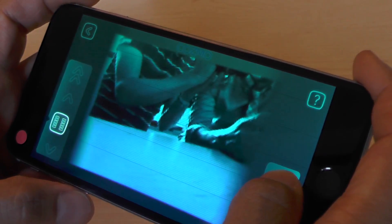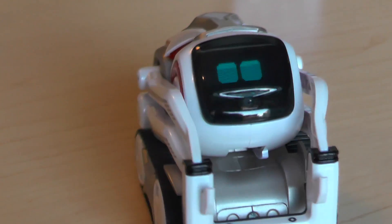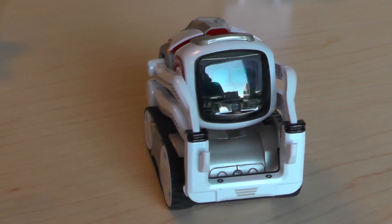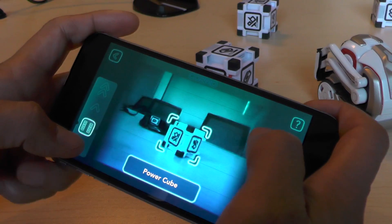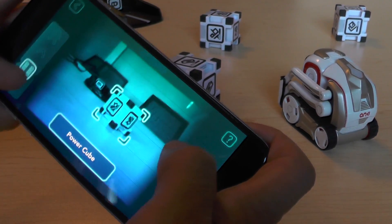You can also unlock completely new modes, for example additional games or another one is what we call Explorer Mode. That's where you use your mobile device to control the robot—almost like remote controlling him around. You get a camera view on your phone from the robot.